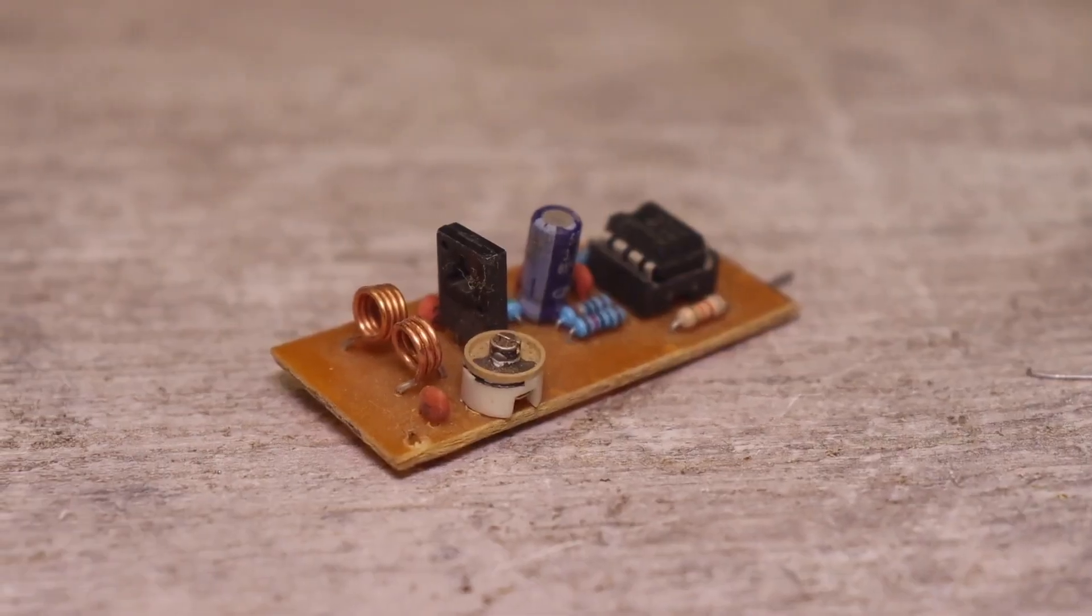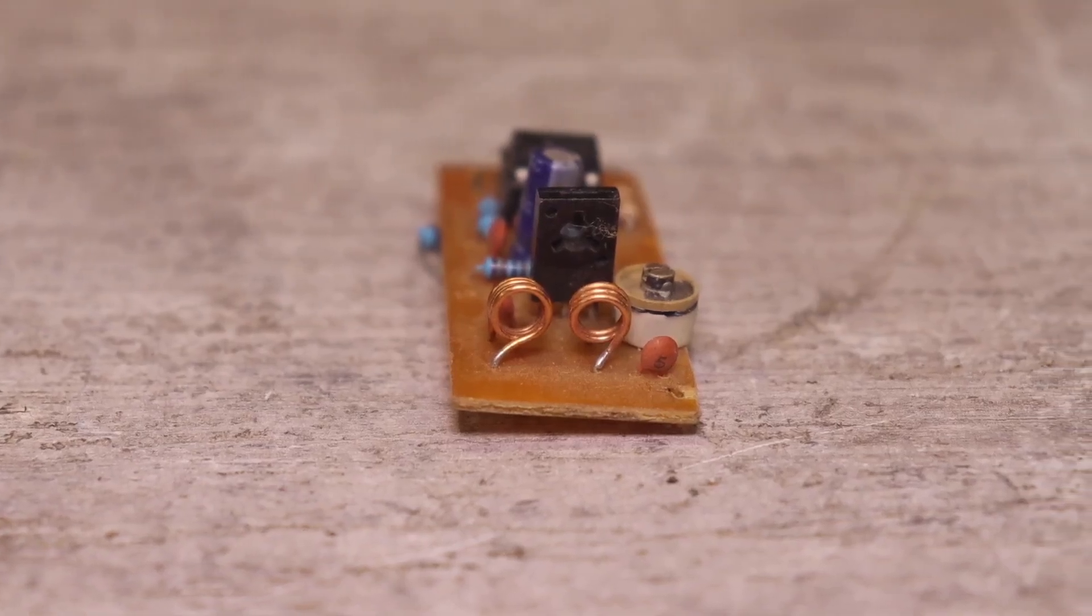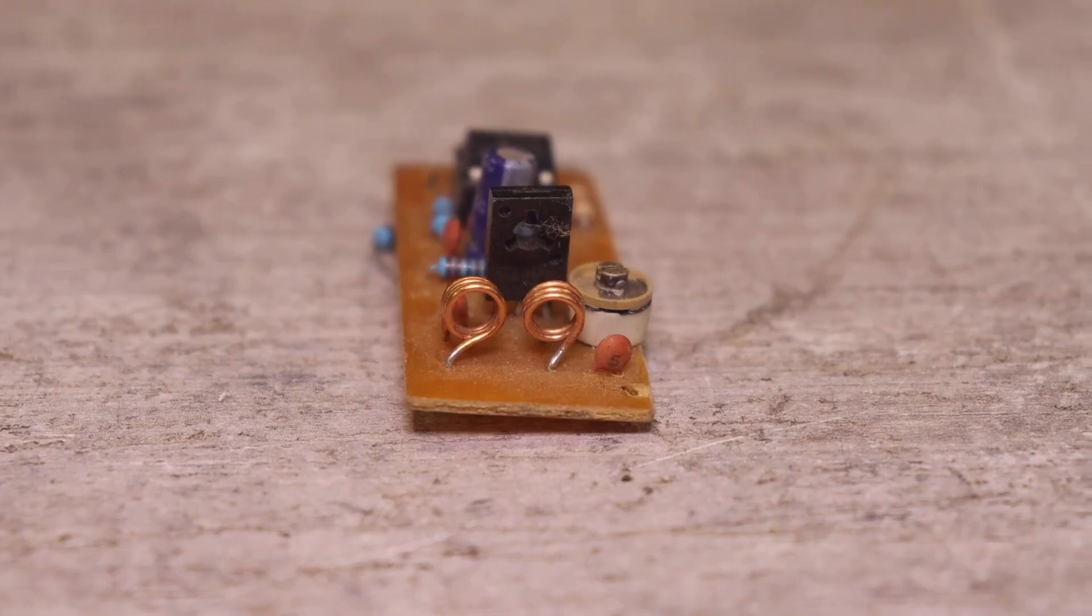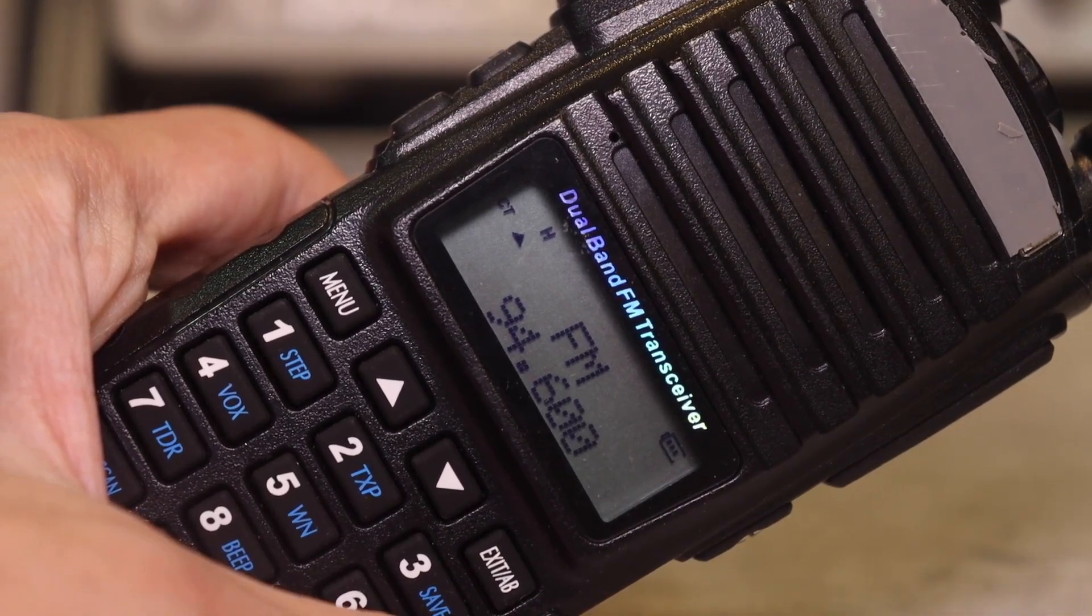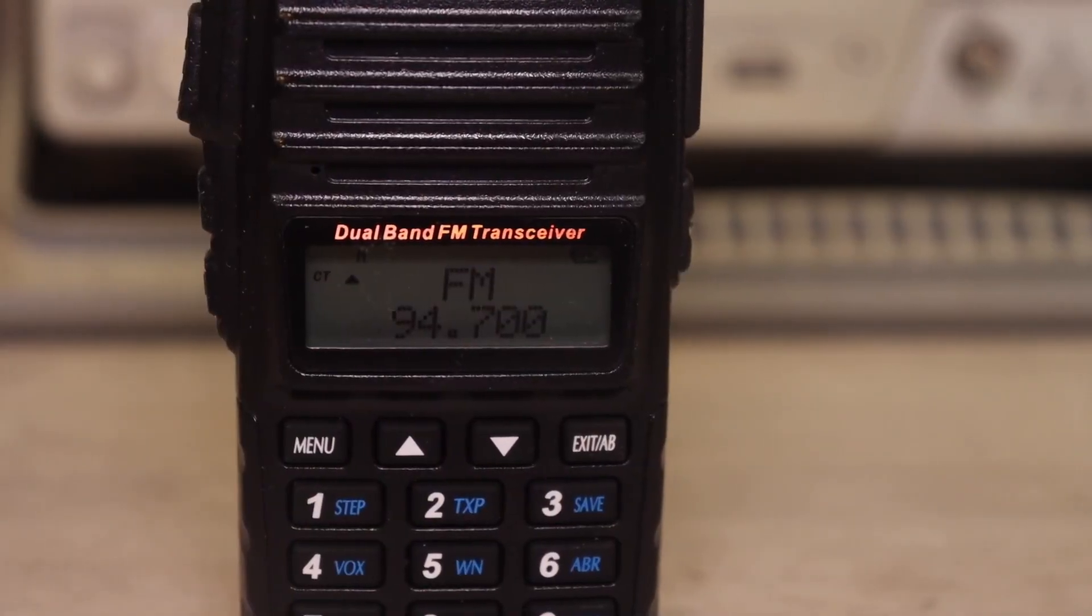Miniature radio transmitters have been assembled by radio amateurs at all times. We all once made simple bugs on one transistor. For easy radio reception such a transmitter is often tuned to the FM range so that it is possible to use a common radio receiver.